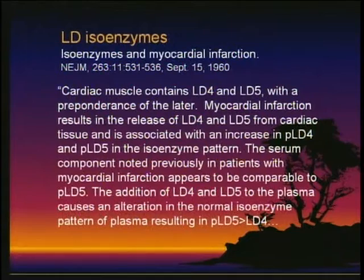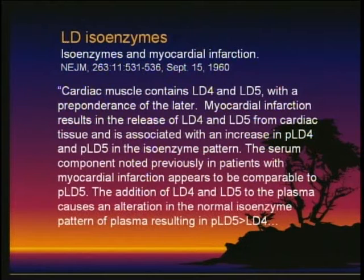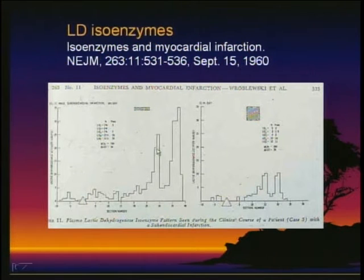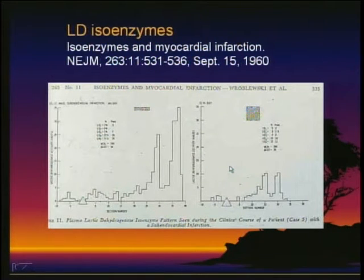By 1960, more specificity was needed because these enzymes are present in a lot of tissues, not just cardiac tissue — so isoenzymes were introduced. We could put the sample in an electrical field and separate out various subtypes. They described in the New England Journal of Medicine how you can use LD isoenzymes in the diagnosis of acute MI. Here is the early tracing from that article by Robilewski — it pales in comparison to what we do today, but it was very exciting work in the 1960s.